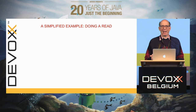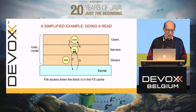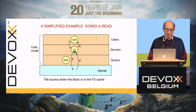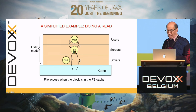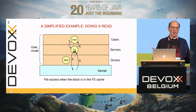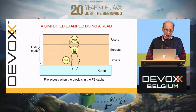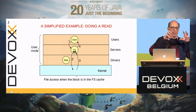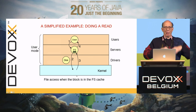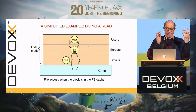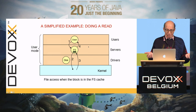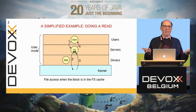Here's a simplified example of how read works. The user process sends a message to the file system. The file system has a buffer cache, and it looks to see if the thing it wants is in the cache. If it is, it sends a message to the kernel saying go copy this piece of cache memory to the user, the kernel does it, and then the file system tells the user it's completed. That works nicely if everything's in the cache.